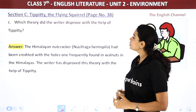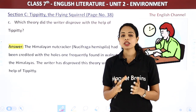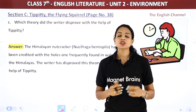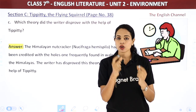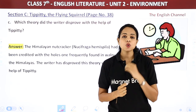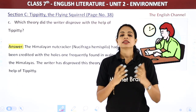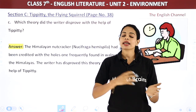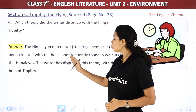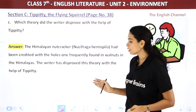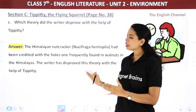Next question: Which theory did the writer disprove with the help of Tippity? All the naturalists believed that the holes found in walnuts in the Himalayan region were made by Himalayan nutcrackers. But the writer conducted an experiment through which it became clear that it was not the birds but squirrels making those holes. The Himalayan nutcracker had been credited with the holes one frequently found in walnuts in the Himalayas, and the writer disproved this theory with the help of Tippity.